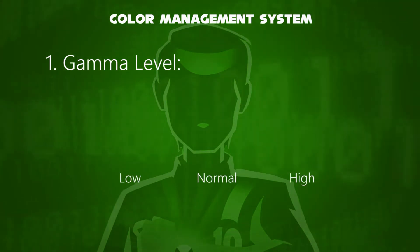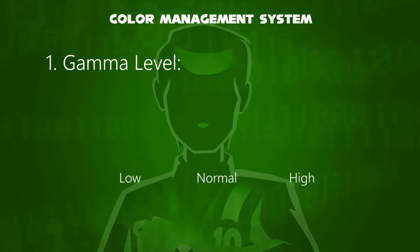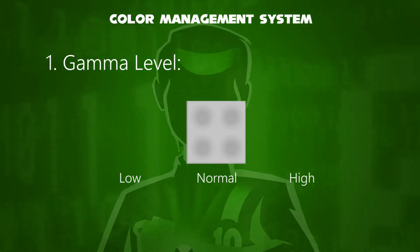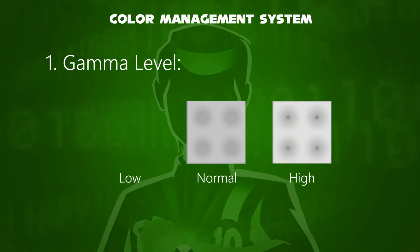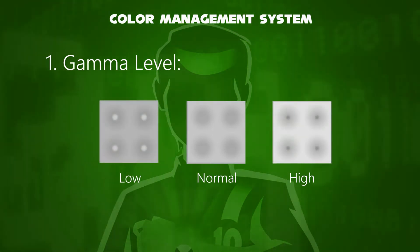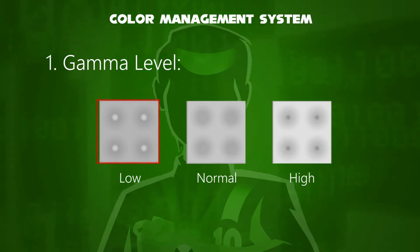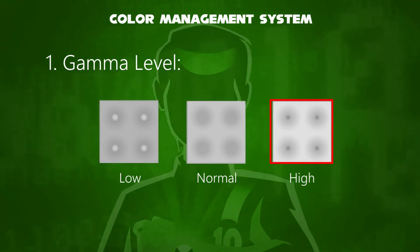The first type of color calibration is the gamma level. It tells you the mathematical relationship between RGB values sent to the display and the amount of light emitted from it. When you move the slider, it determines the ratio of the color amount. If there are white spots seen on the screen, that means gamma is set too low. Similarly, if there are black spots on the screen, that means gamma is set too high.